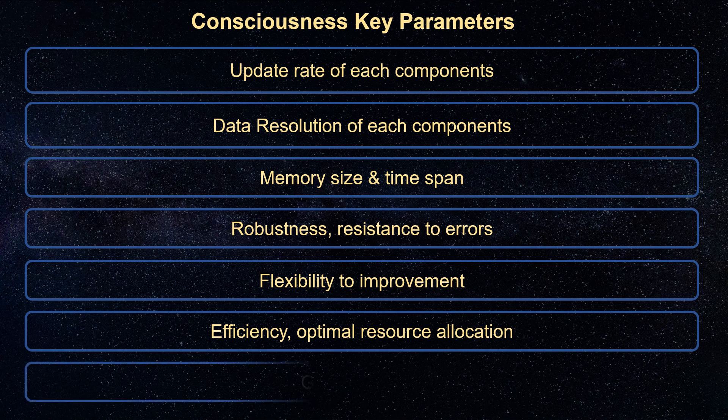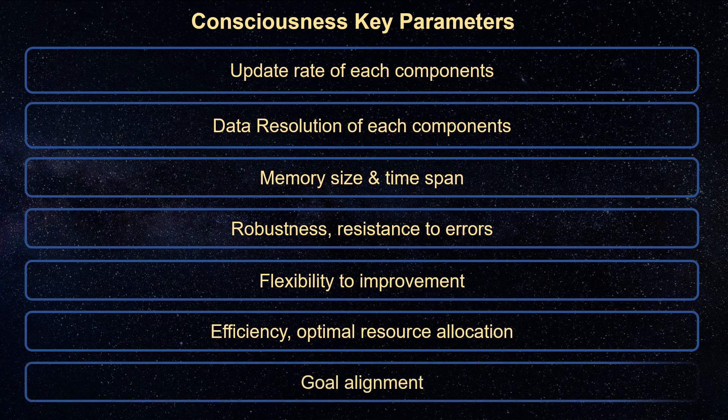Last but not least, goal alignment — higher consciousness levels align their goals closer to the universal terminal goal. Having an unaligned goal increases the risk of extinction.